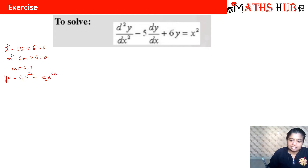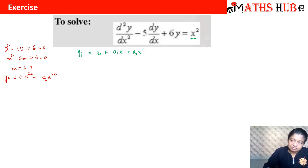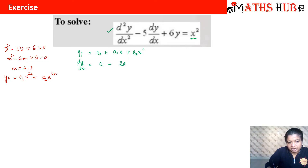Now let us calculate the particular solution yp. The right-hand side function is x², so we assume the trial solution to be a polynomial: yp = a0 + a1x + a2x². To substitute into the differential equation, we need the derivatives: dy/dx = a1 + 2a2x, and d²y/dx² = 2a2.